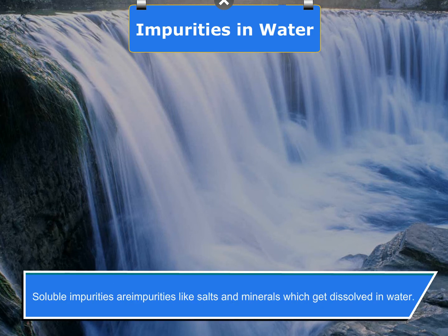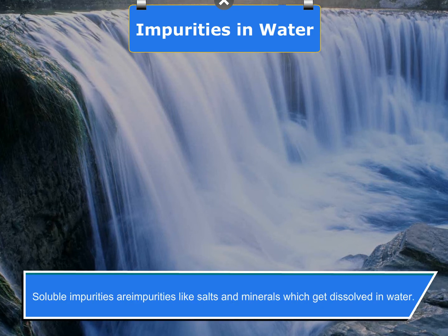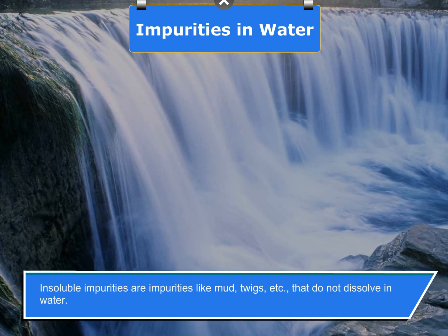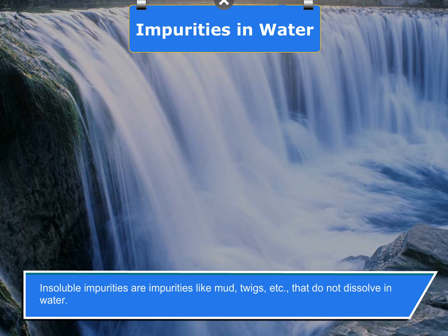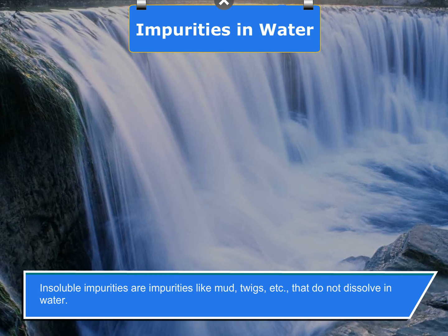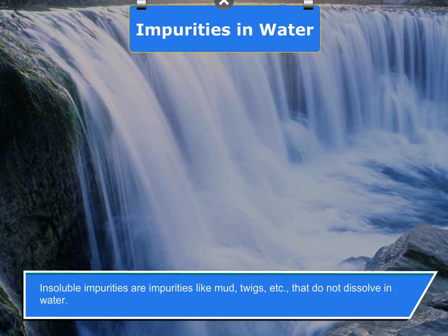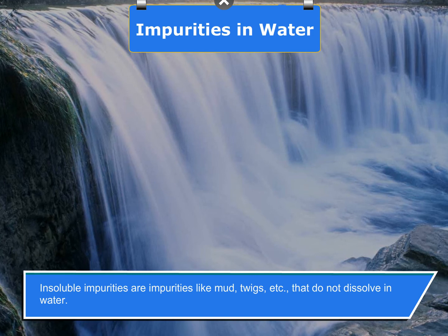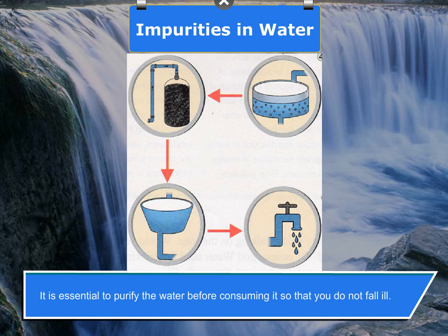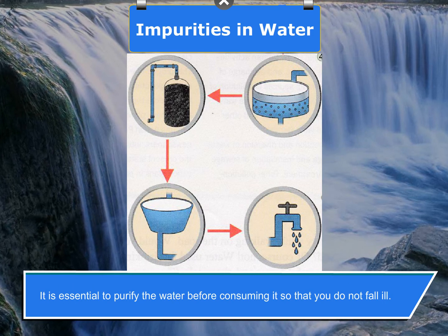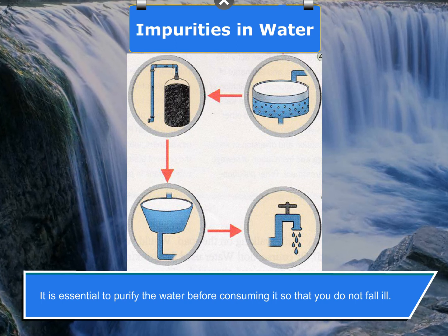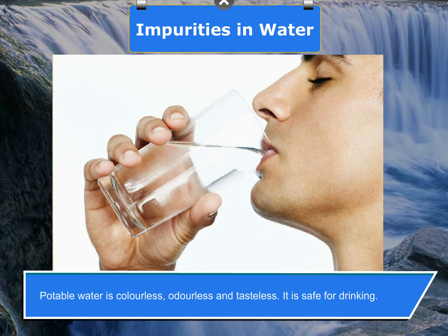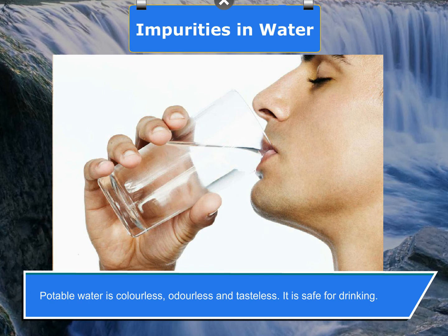Insoluble impurities are impurities like mud and twigs that do not dissolve in water. It is essential to purify water before consuming it so that you do not fall ill. Potable water is colorless, odorless, and tasteless, and is safe for drinking.